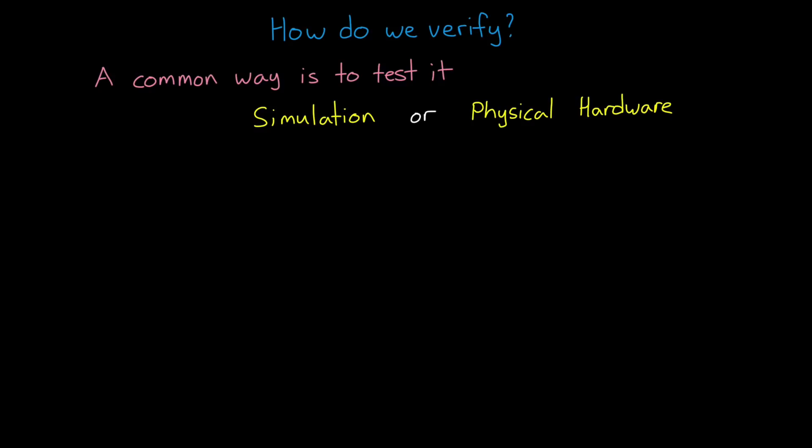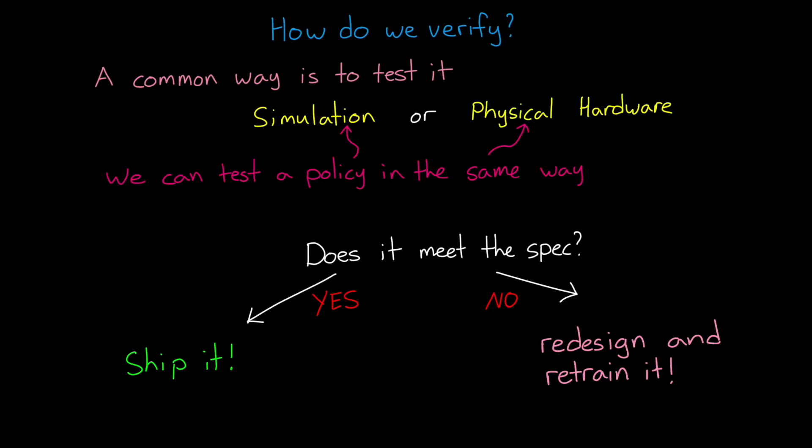Again, if we find a problem, we have to retrain the policy to fix it, but testing the policy appears to be similar. However, there are some pretty important differences that make testing a neural network policy difficult. For one, with a learned policy, it's hard to predict how the system will behave in one state based on its behavior in another.